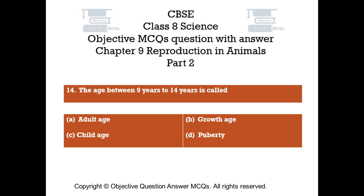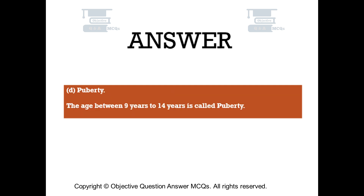Question number 14. The age between 9 years to 14 years is called. Option A: Adult Age. Option B: Growth Age. Option C: Child Age. Option D: Puberty. The right answer is Option D: Puberty. The age between 9 years to 14 years is called puberty.